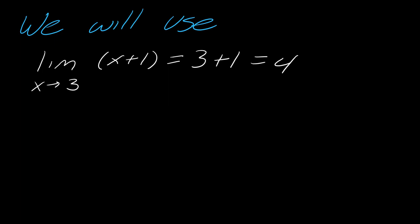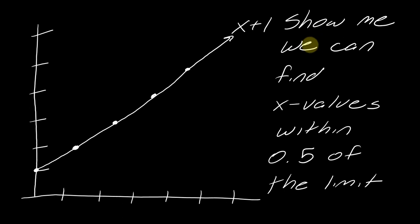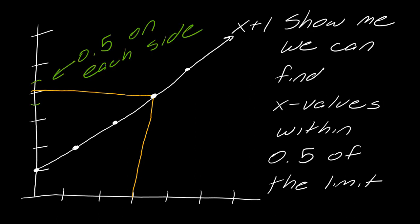Here's the idea: I say to you, I get that you think that's the limit, but I don't believe you. I would believe you if you could prove to me that if we get within a certain tolerance around 4, some x values exist that would still get us pretty close to 4. More specifically, I want you to show me we can find x values that are within 0.5 of the limit. So instead of just precisely drawing these values on a graph, I'm going to be a skeptic and say I don't believe it works — show me we can find x values within 0.5 of this limit.